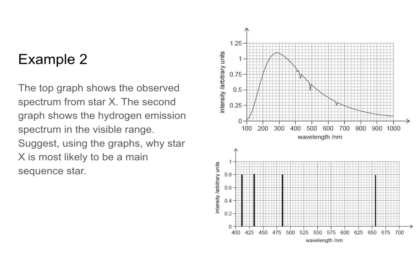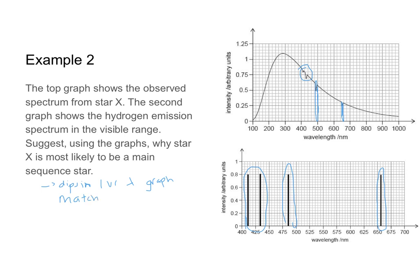So let's take a look at another IB example. The top graph shows the observed spectrum from star X. The second graph shows the hydrogen emission spectrum. Suggest, using the graphs, why star X is most likely to be a main sequence star. So here, what I would do is I would start and I would look at my dips. And you can see I've got a dip here right around 656, 616 nanometers. I have another one here between 400 and 500, like so. And I have two more, both between 400 and 500, but on the lower end of that scale. So what I would say is the dips in the graph, or in the intensity wavelength graph, they match the wavelength of the hydrogen emission spectrum. This suggests that the star is mostly made up of hydrogen, which therefore means that it must be a main sequence star.